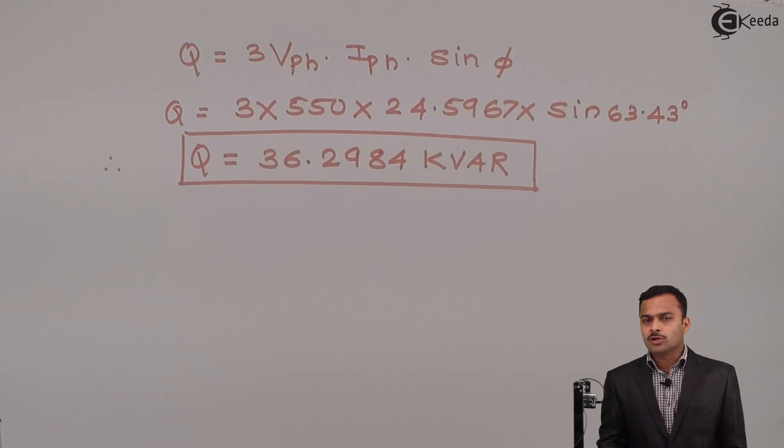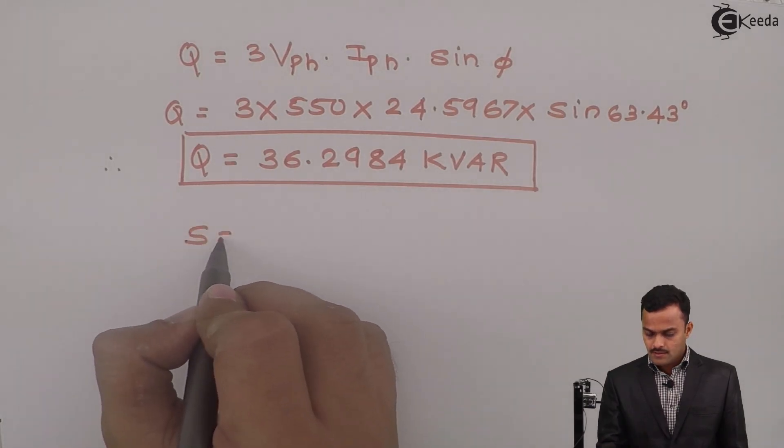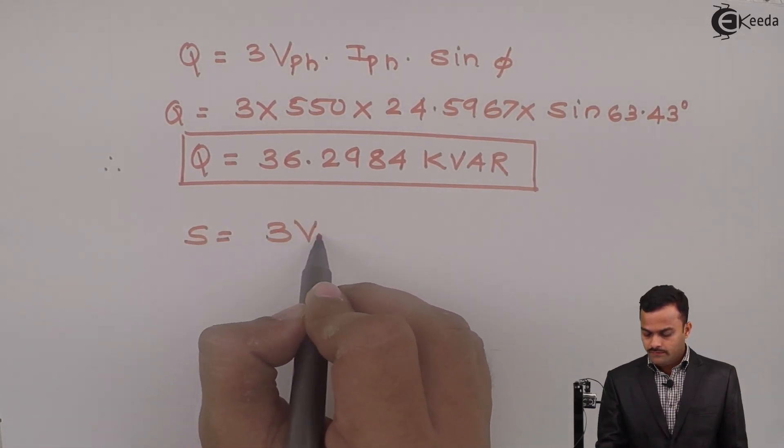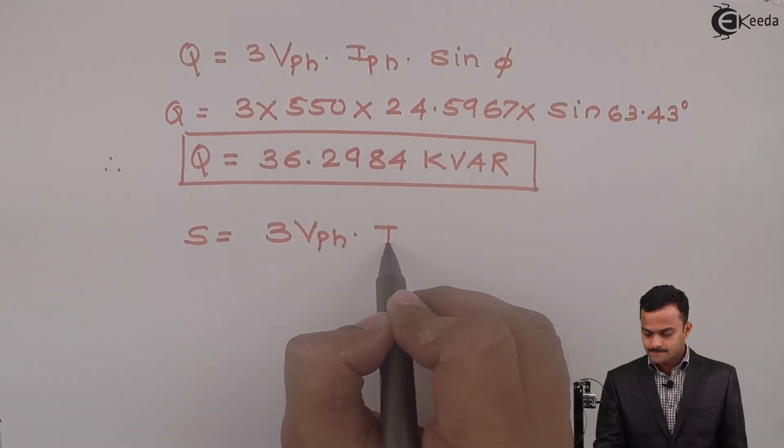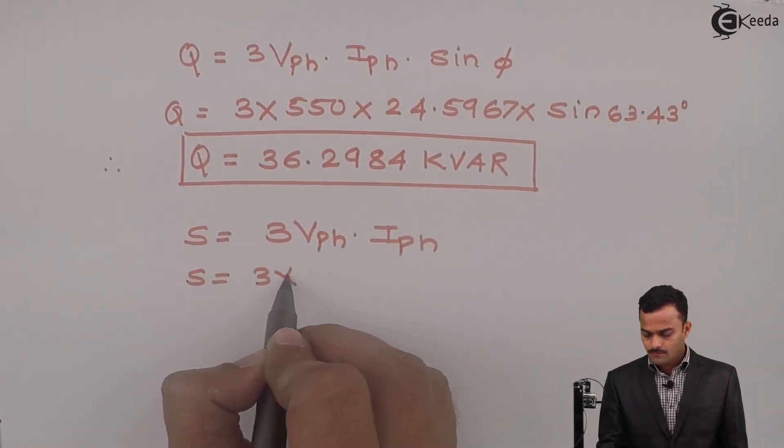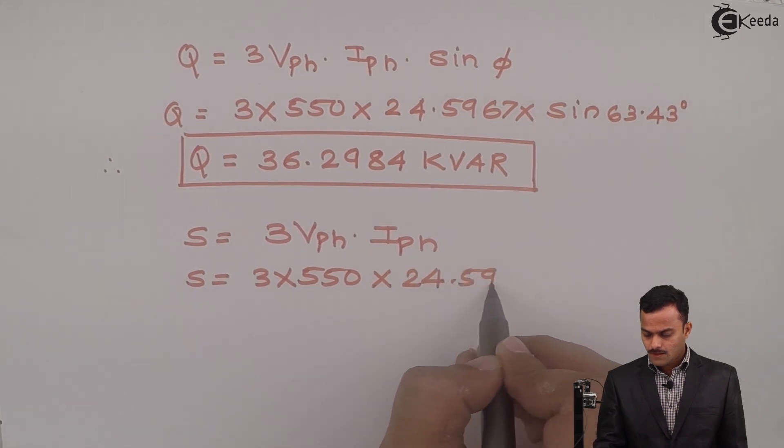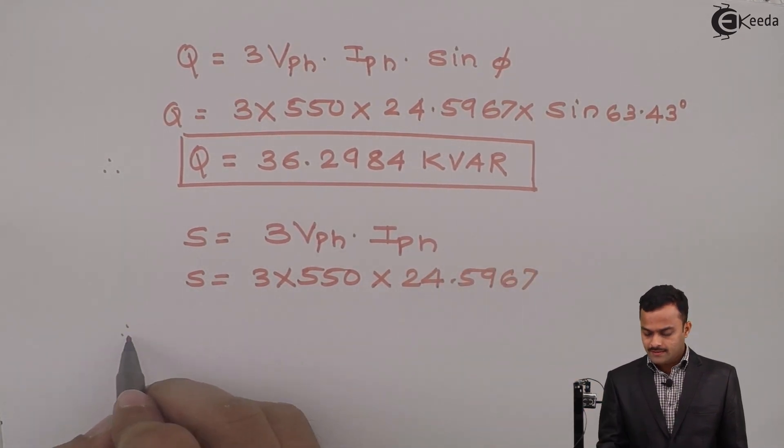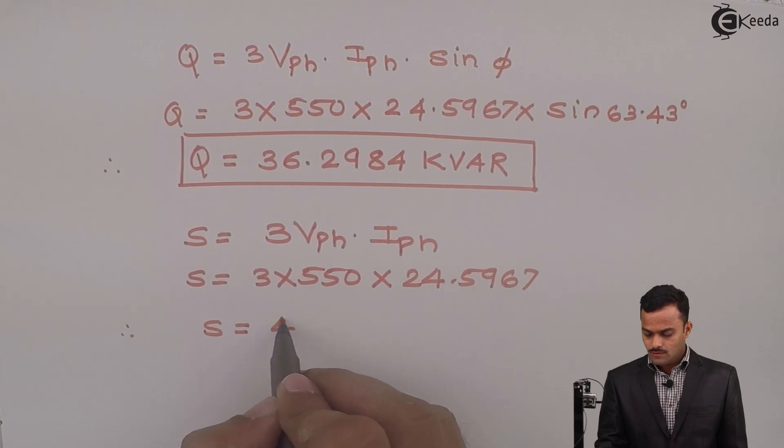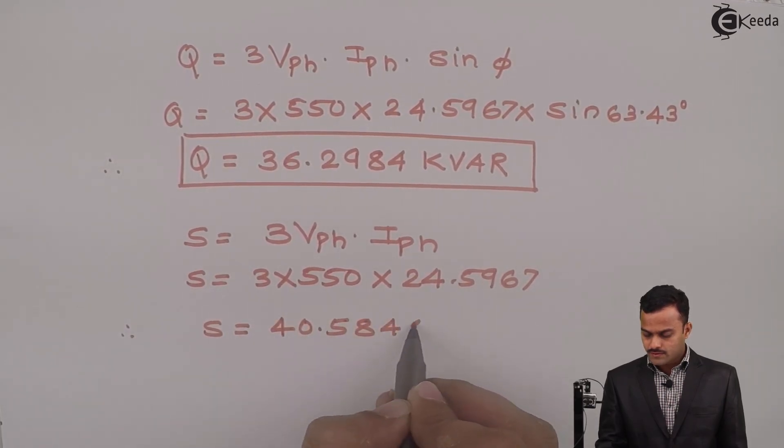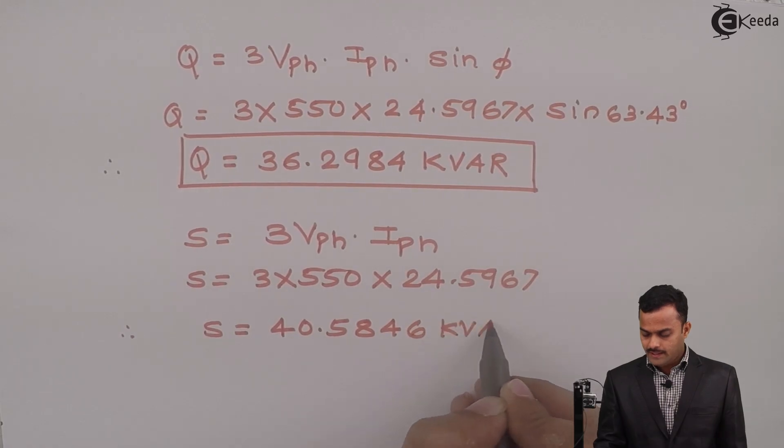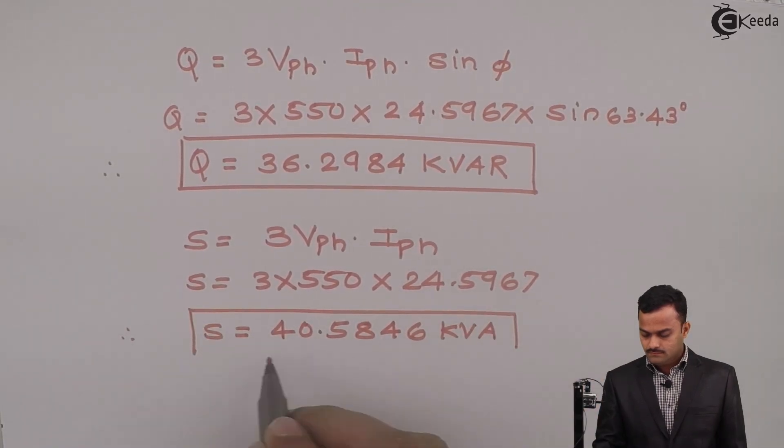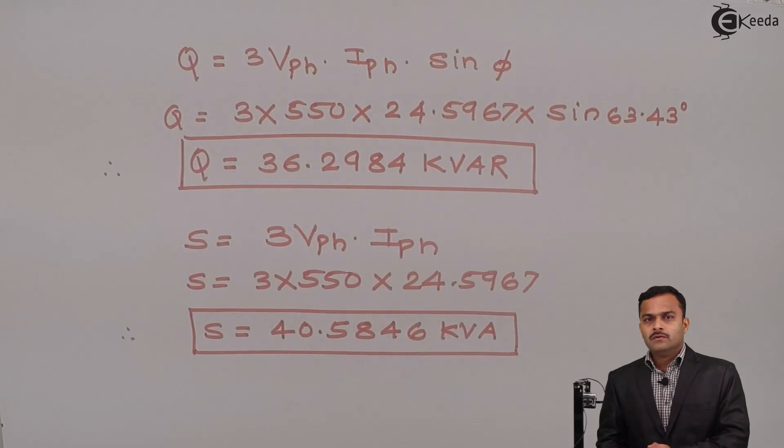And finally KVA rating of the load S equal to 3 VPH into IPH. So I will get S equal to 40.5846 kVA which is the required answer.